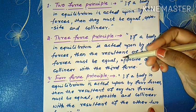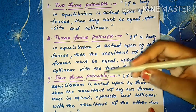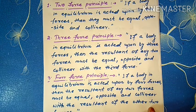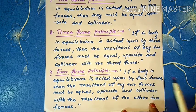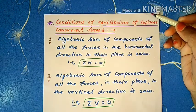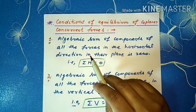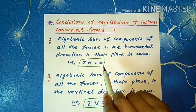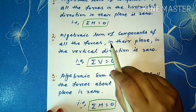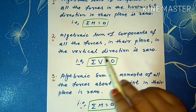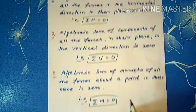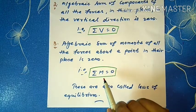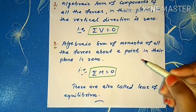Third principle is the four-force principle: if a body in equilibrium is acted upon by four forces, then the resultant of any two forces must be equal, opposite and collinear with the resultant of the other two forces. Now, conditions of equilibrium of coplanar concurrent forces — first condition: the algebraic sum of components of all the forces in the horizontal direction in their plane is zero, i.e., ΣH = 0. Second: the algebraic sum of components of all the forces in the vertical direction is also zero, i.e., ΣV = 0. Third: the algebraic sum of moments of all the forces about a point in their plane is zero, i.e., ΣM = 0. These are called the laws of equilibrium.